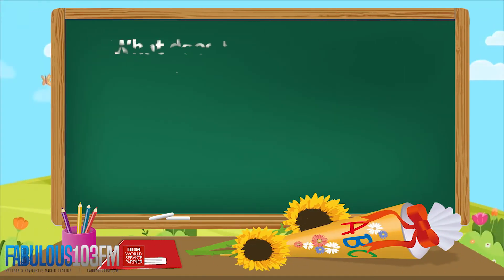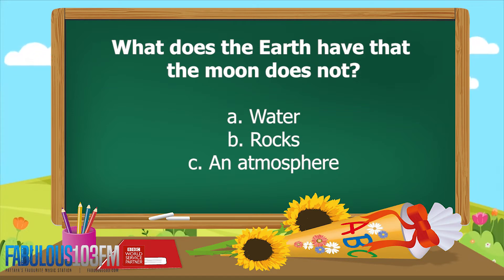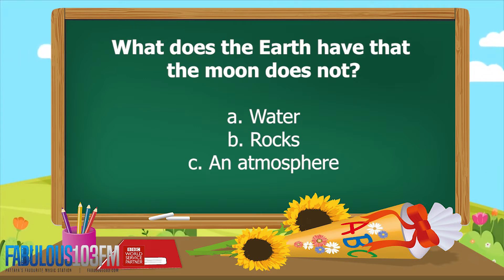...was what does the earth have that the moon does not — a) water, b) rocks, or c) an atmosphere? What do you think — a, b, or c? Shout your answer at the radio as loud as you can!